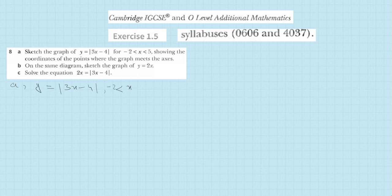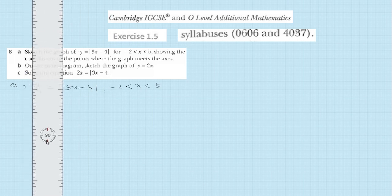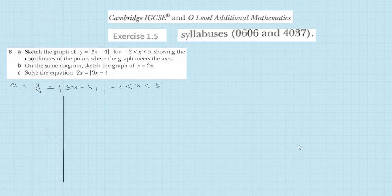x is given in the domain −2 < x < 5. First we need to draw a table which shows the values of x and values of y. We take the values of x as −1, 0, 1, 2, 3, and 4, and now put them in one by one.